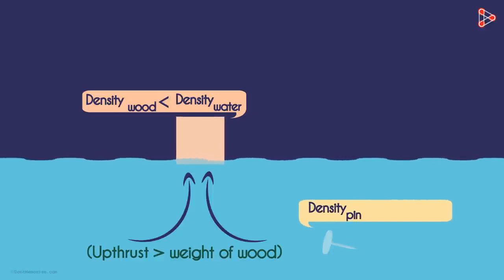But the density of a metal pin is more than the density of water. Though it looks tiny, there's more mass per unit volume within it as compared to water. Hence the upthrust of water on the pin is less than the weight of the pin.